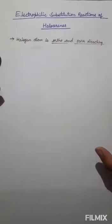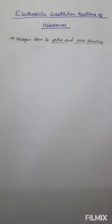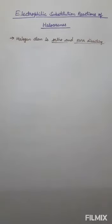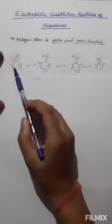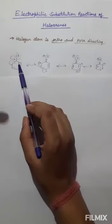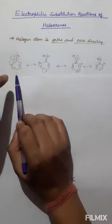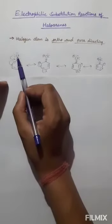First of all, as we know that in haloarenes the halogen atom is ortho and para directing. Whenever there is a ring in haloarenes there must be a halogen group, and that halogen group is ortho and para directing in nature. This can be understood by the resonance structure of haloarenes. Let's discuss the resonating structures of chlorobenzene.